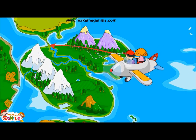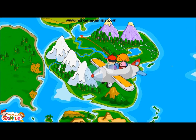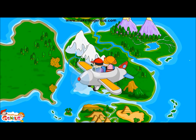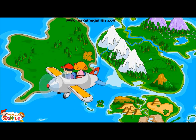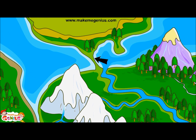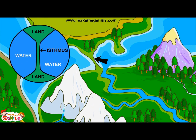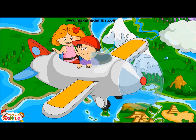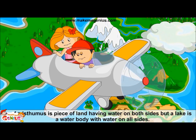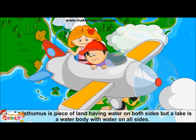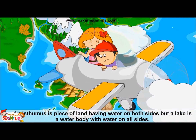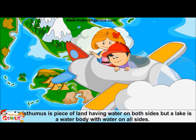It is an isthmus. An isthmus is a narrow strip of land connecting two large land masses. An isthmus has water on two sides. A river has water on all sides, but an isthmus has water on two sides. You are a genius. An isthmus is a piece of land having water on both sides, but a lake is a water body with land on all sides.